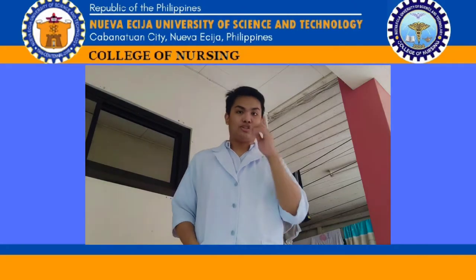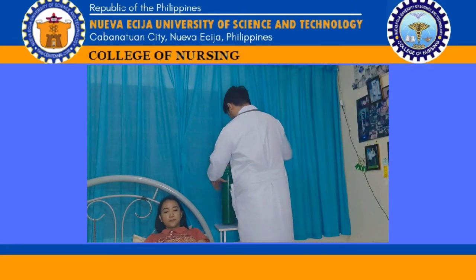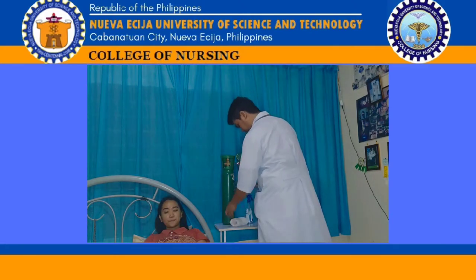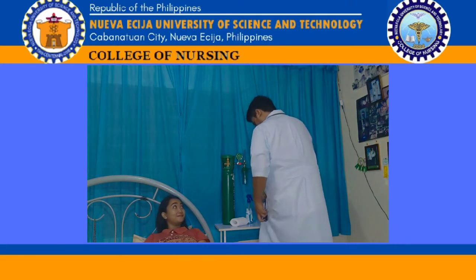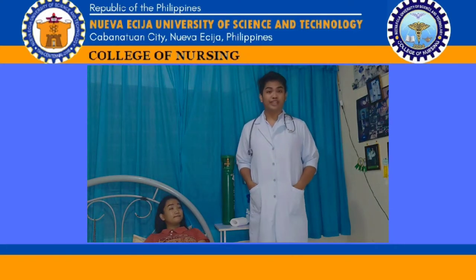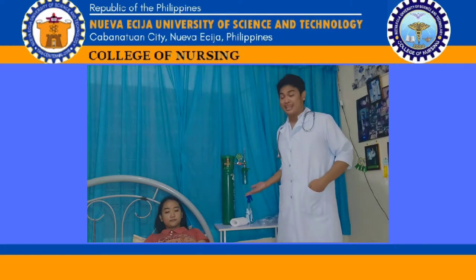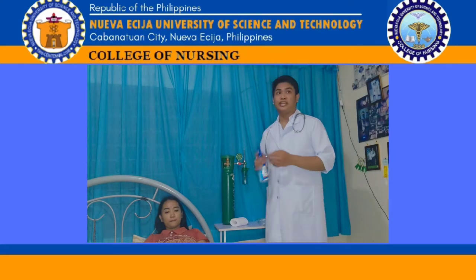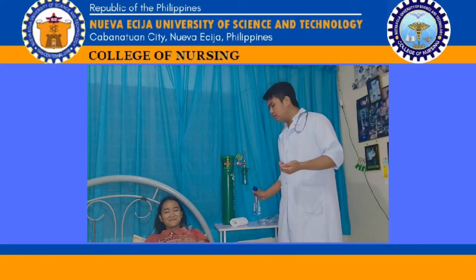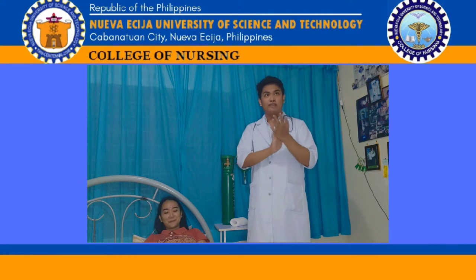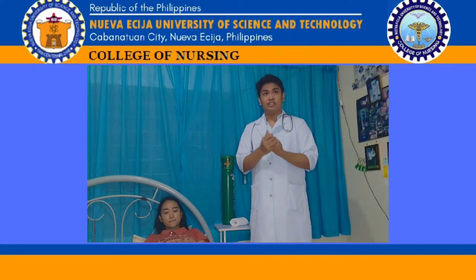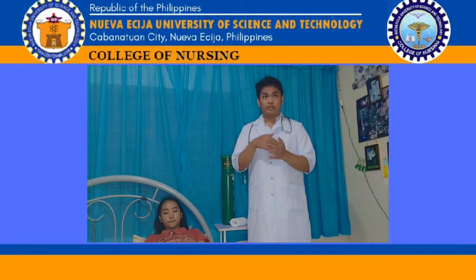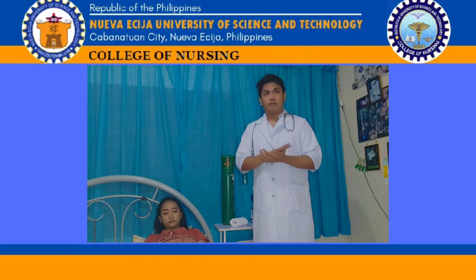Let's proceed to the implementation. Bring necessary equipment to the bedside stand and overbed stand. I've set up all the equipment here. Then perform hand hygiene and put on PPE if indicated. Identify your patient, close the curtains around the bed, and close the door of the room if possible. Explain what you're going to do and the reason for doing it to the patient. Review precautions necessary when oxygen is in use, and place no-smoking signs in appropriate areas.